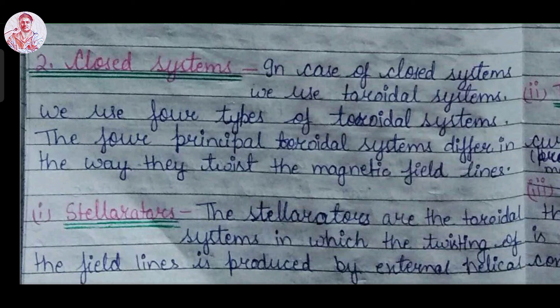The second technique of plasma confinement is closed system. In this case, we use toroidal systems. We use four types of toroidal systems. The four principal toroidal systems may differ in the way they twist the magnetic field lines.